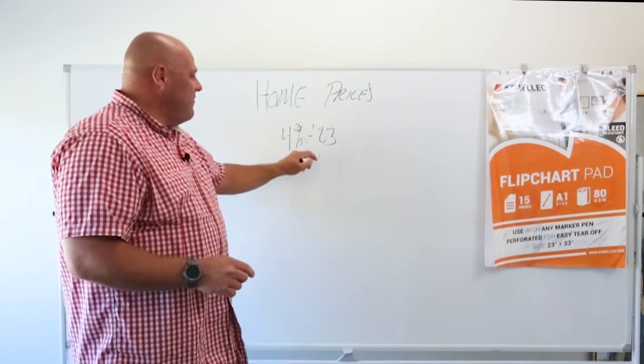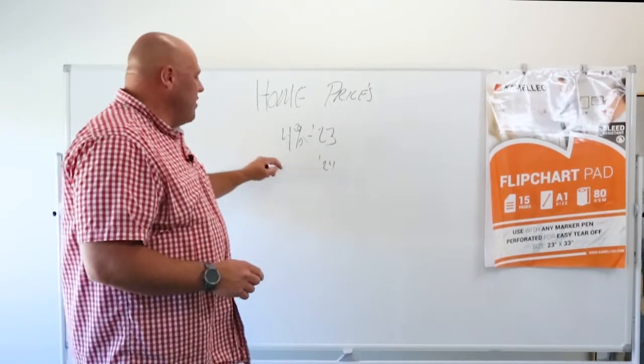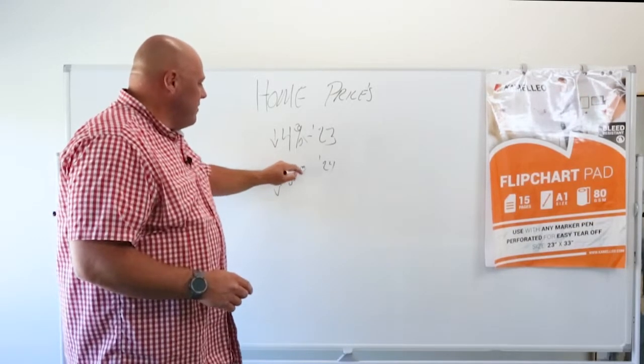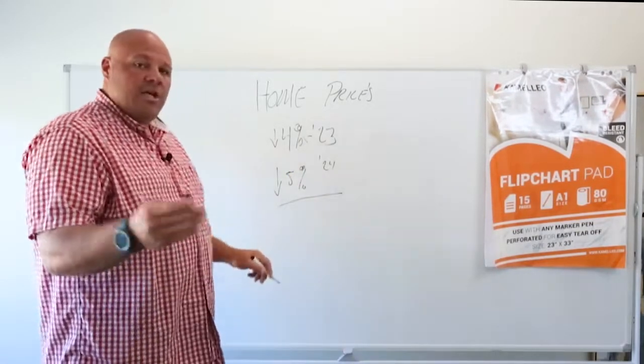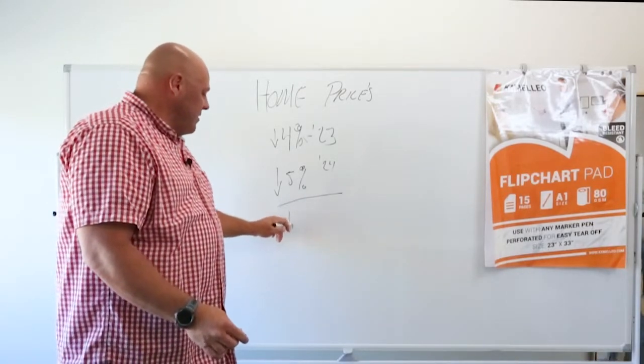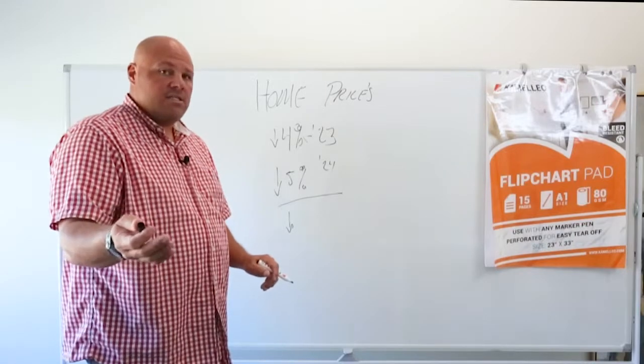She then stated that in '24, they're going to go down 5%. So over the next two years, you can anticipate if Ivy's right, that you're going to see a decrease in home prices.